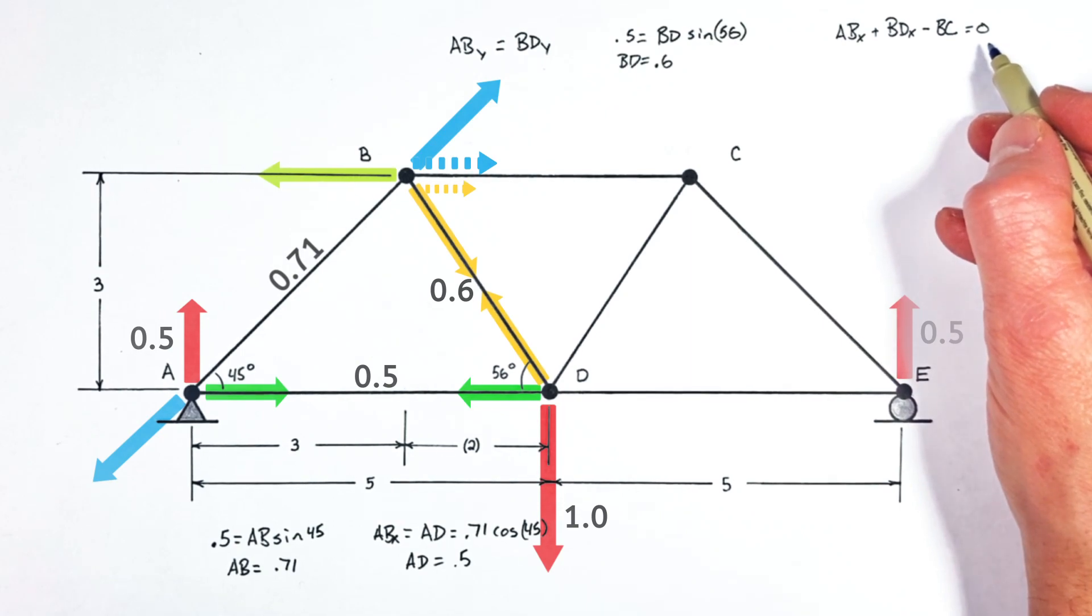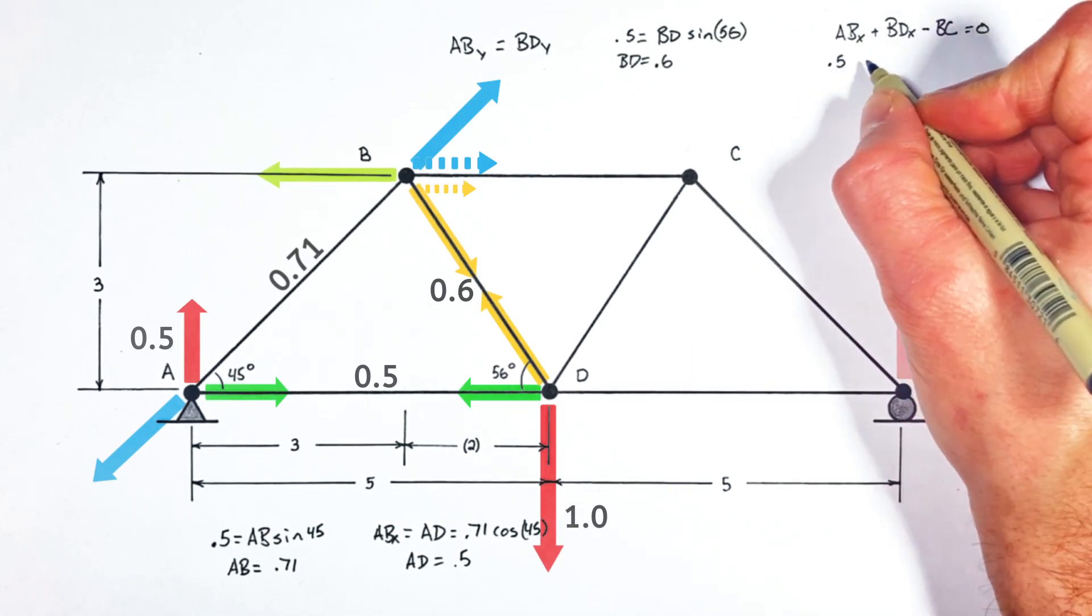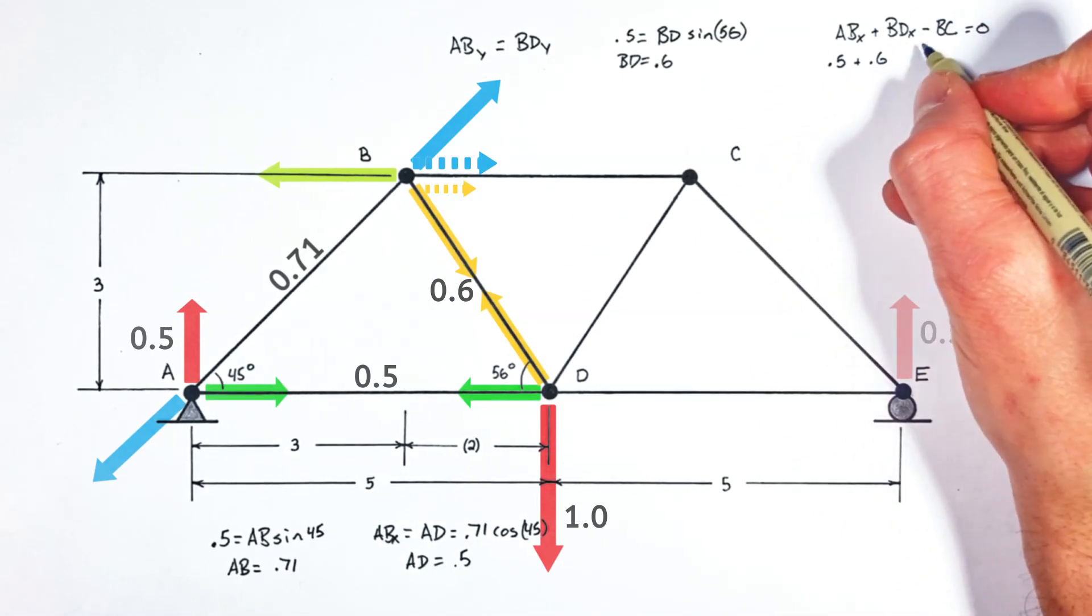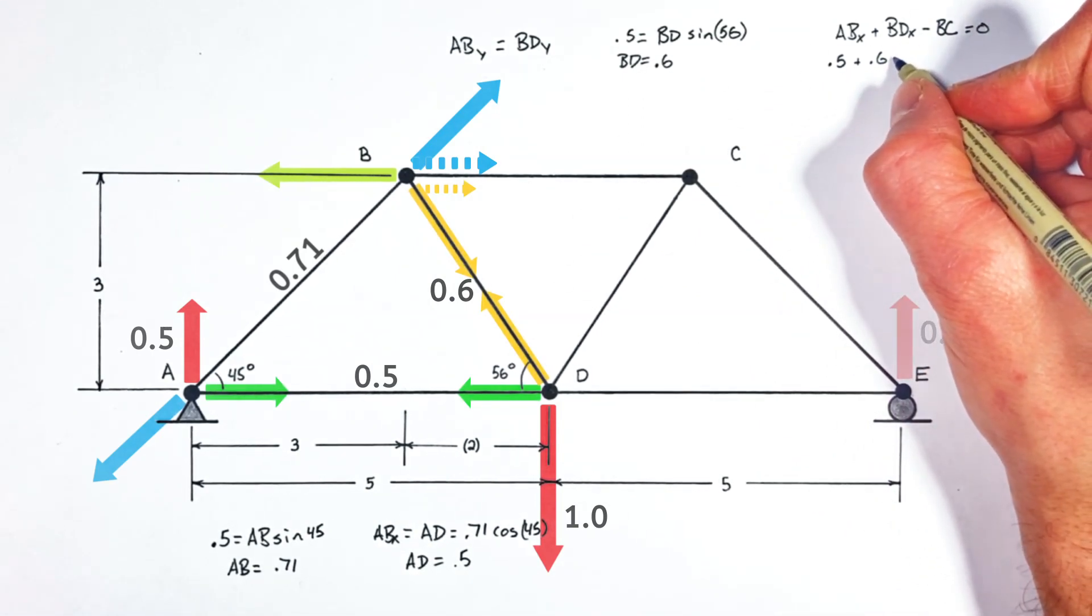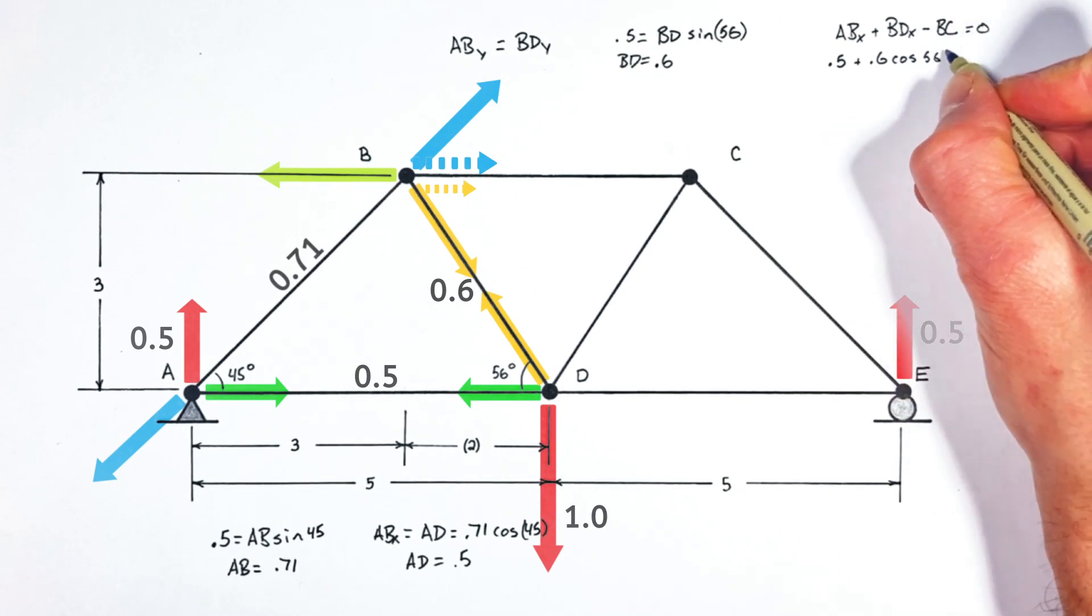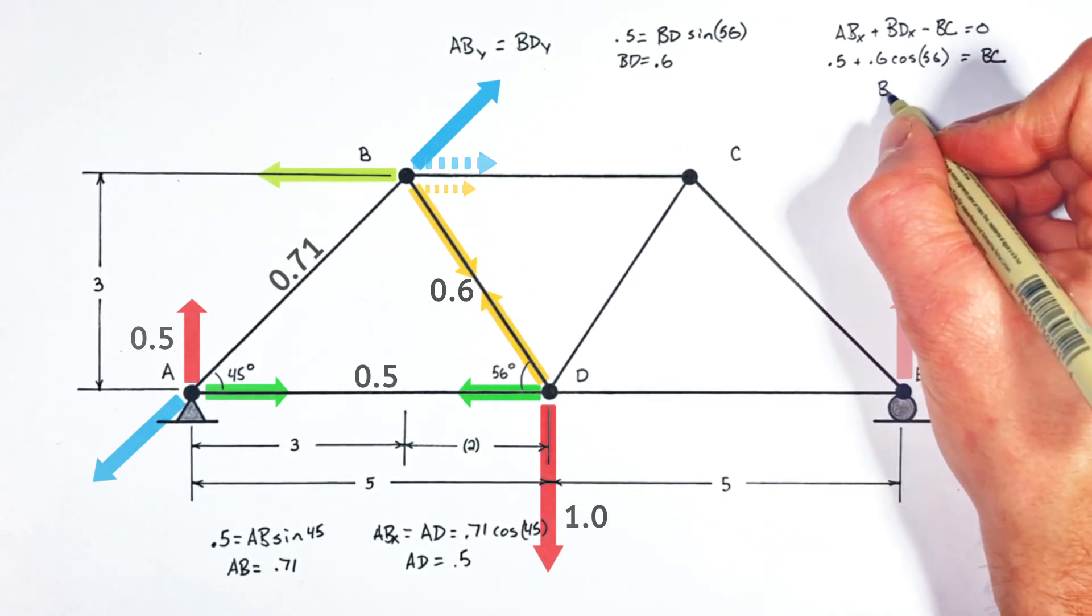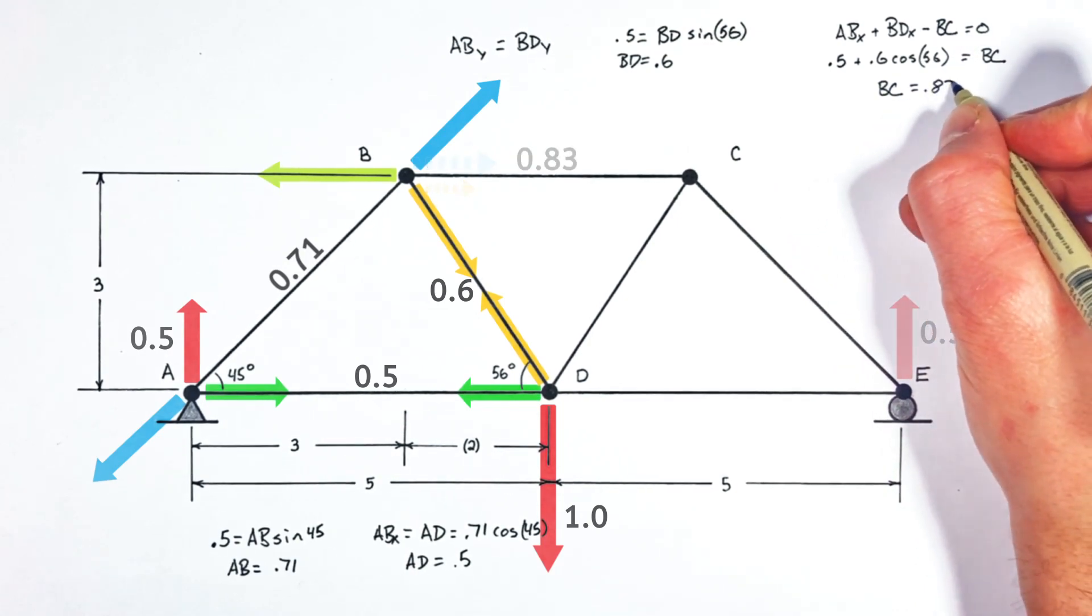But realize, these three values must add up to zero. And knowing the magnitude of BD, we can solve for the horizontal component in BD. That's going to be 0.6 cosine 56. We can set that equal to the force in BC. And we find BC is equal to 0.83.